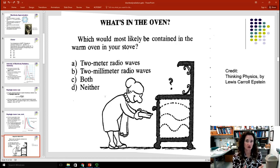So, let me start off with this one called, What's in the Oven? Which would be most likely to be contained in the warm oven in your stove? And by contained, what we mean here is, let's form standing waves that are inside, contained entirely inside this stove. Now, this makes sense if you think about it in terms of a classical wave, like a sound wave or a water wave.